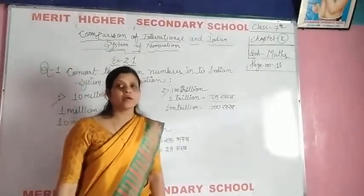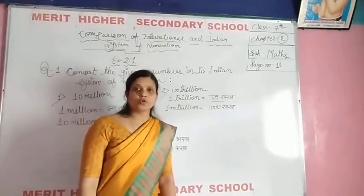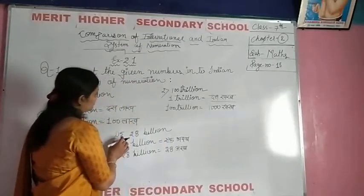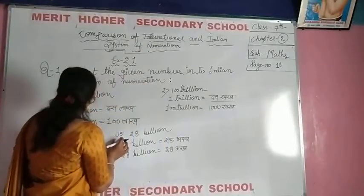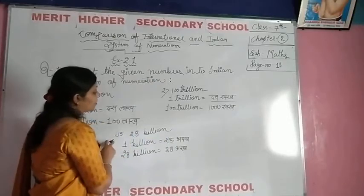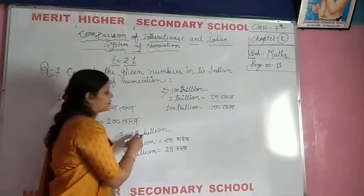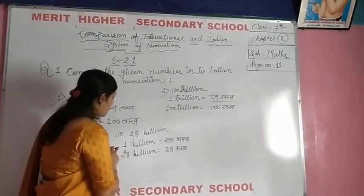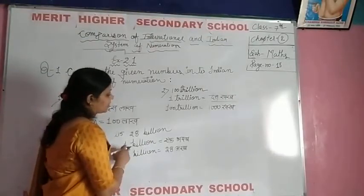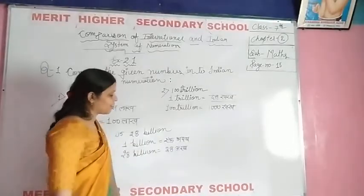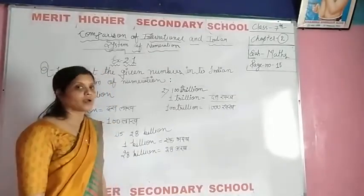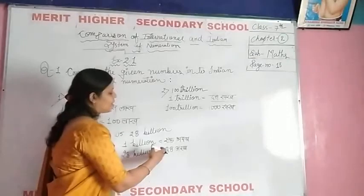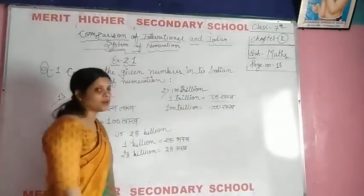The next question is question number 15: 28 billion. We have to convert 28 billion into the Indian system. First, we find 1 billion. 1 billion is equal to how much? So 1 billion equals 100 crore. Therefore 28 billion is our answer: 2800 crore.